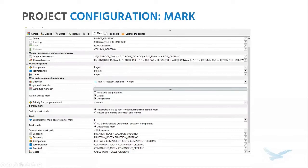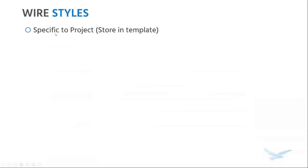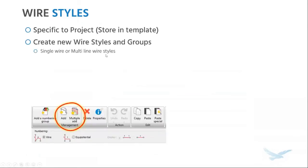Let's move into setting up our wire styles. Keep in mind your wire styles are specific to a project, so ideally store them in a template — there's no wire style library. Create them in your project and store them in your template, so when you use this template to create a new project, all the wire styles from the template are also in your new projects. From the wire style manager, you can create groups as well as new wire styles. These new wire styles could be single-line styles or a multi-line wire style — think control wire versus three-phase power.